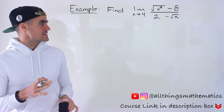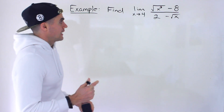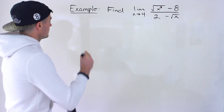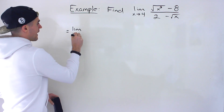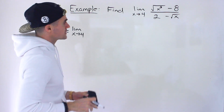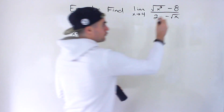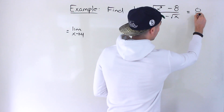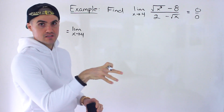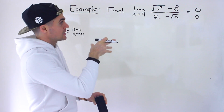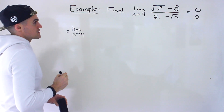So as a heads up, this limit is going to be another double rationalization limit, and there's going to be a little bit of algebra here. Notice first that if we try a direct substitution of 4 into x, we're going to get the indeterminate form 0 over 0, because 4 to the power of 3 is 64, the square root of 64 is 8, minus 8 is 0, and then 2 minus the square root of 4 is 2 minus 2 — the denominator is 0 as well.